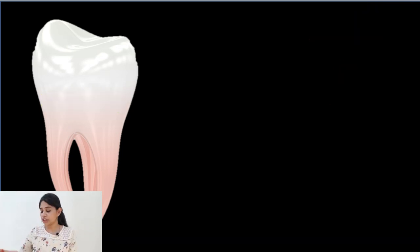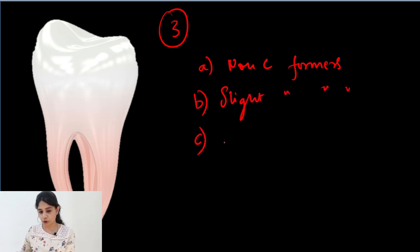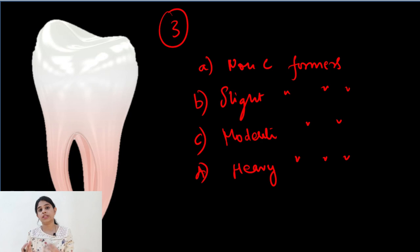Now let's talk about the third way in which we can classify. Now this is based upon the formation and accumulation of calculus in different individuals. We can classify them into non-calculus formers, slight calculus formers, moderate calculus formers and heavy calculus formers. So this classification is based upon the rate of accumulation or formation of dental calculus.